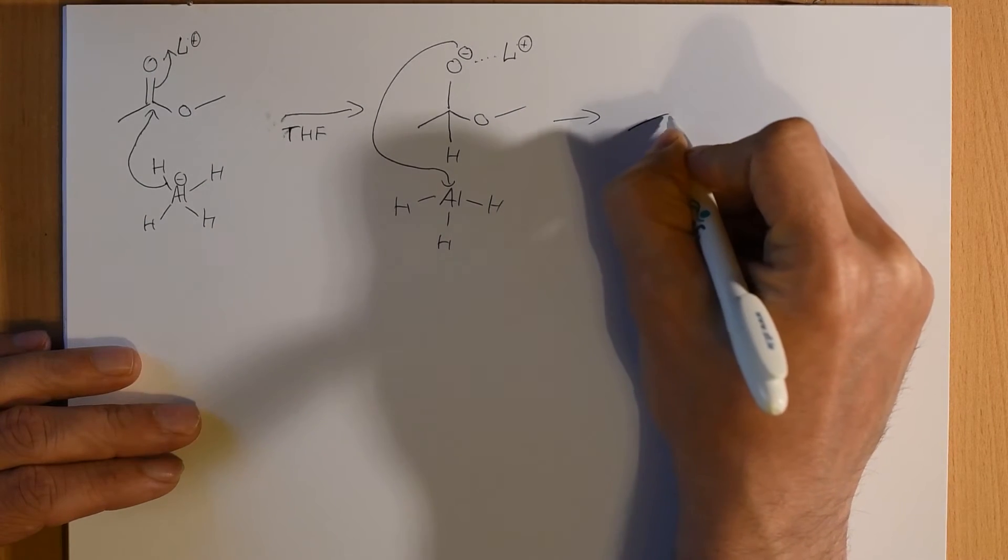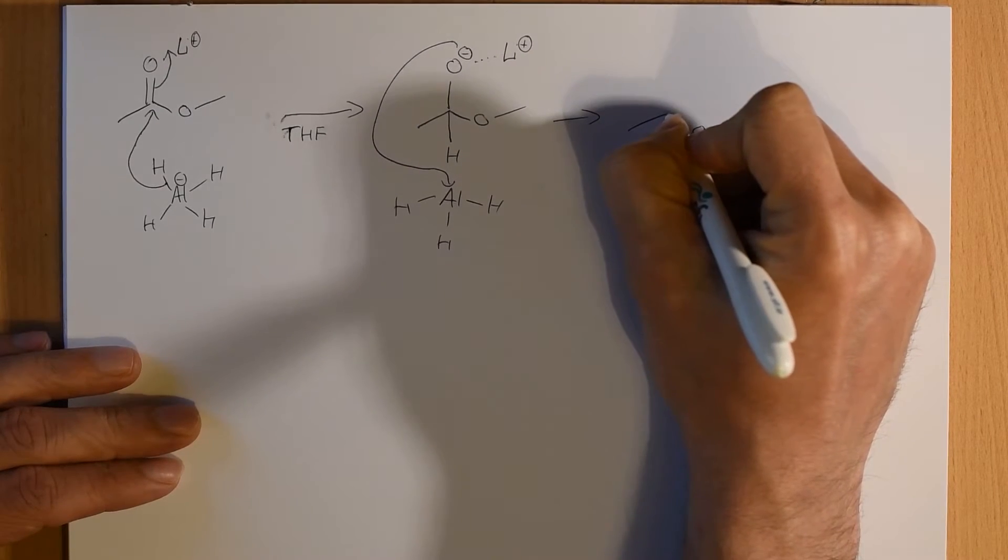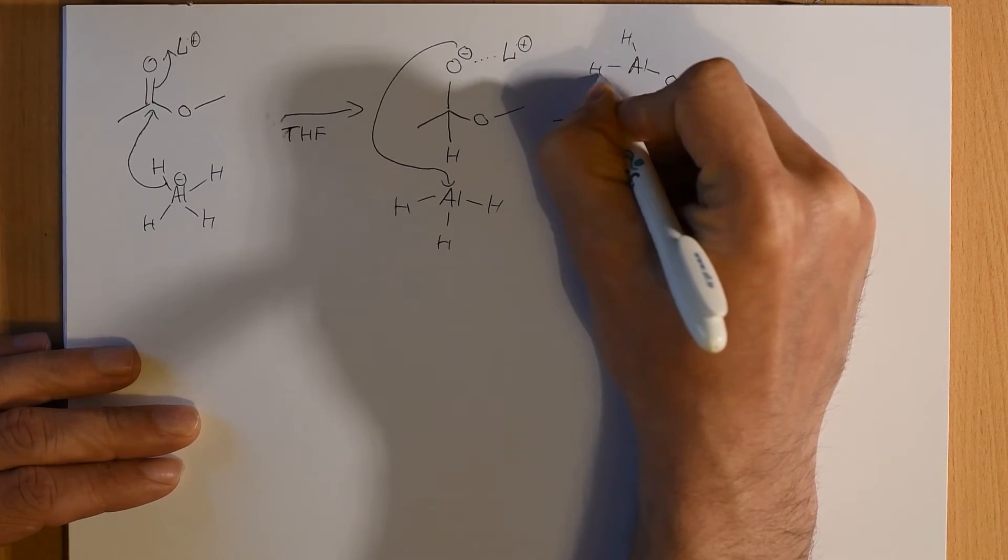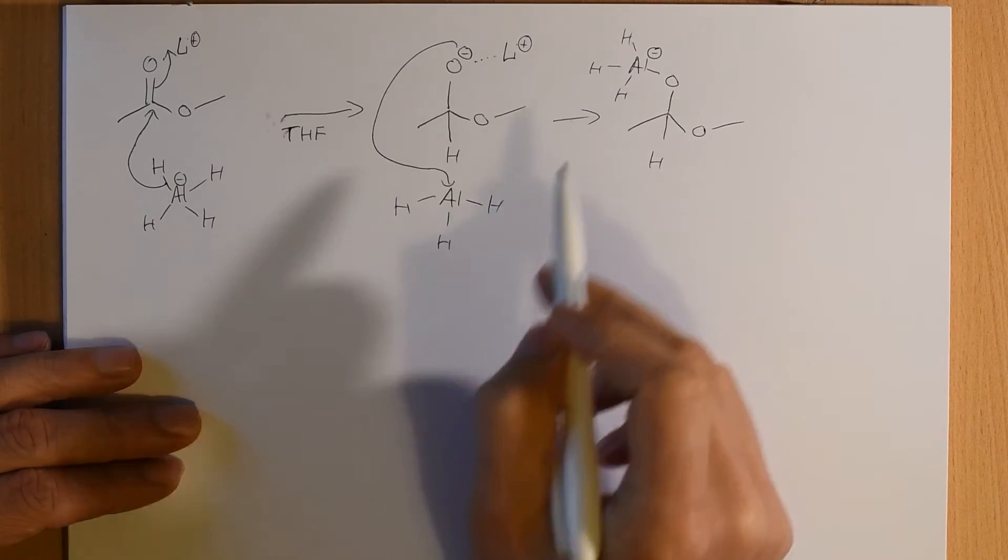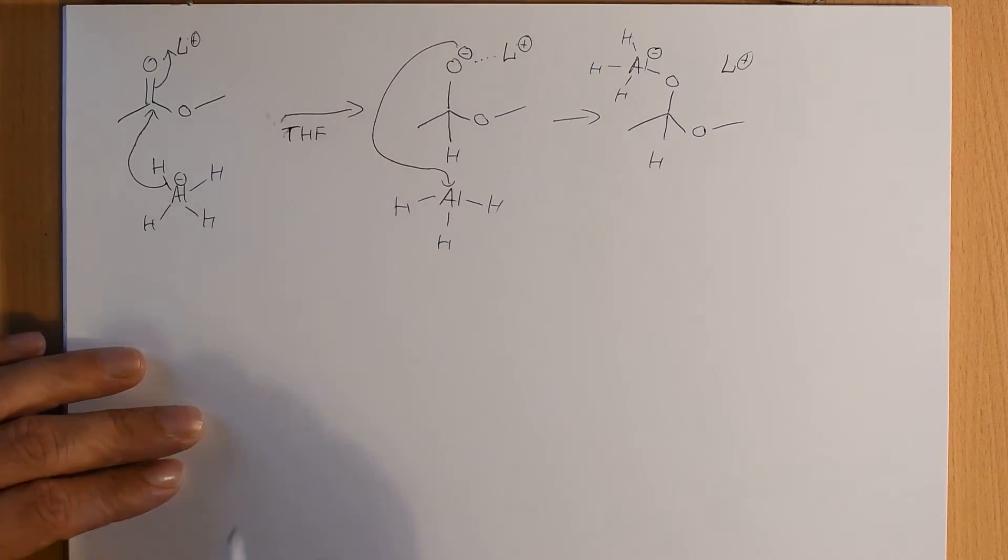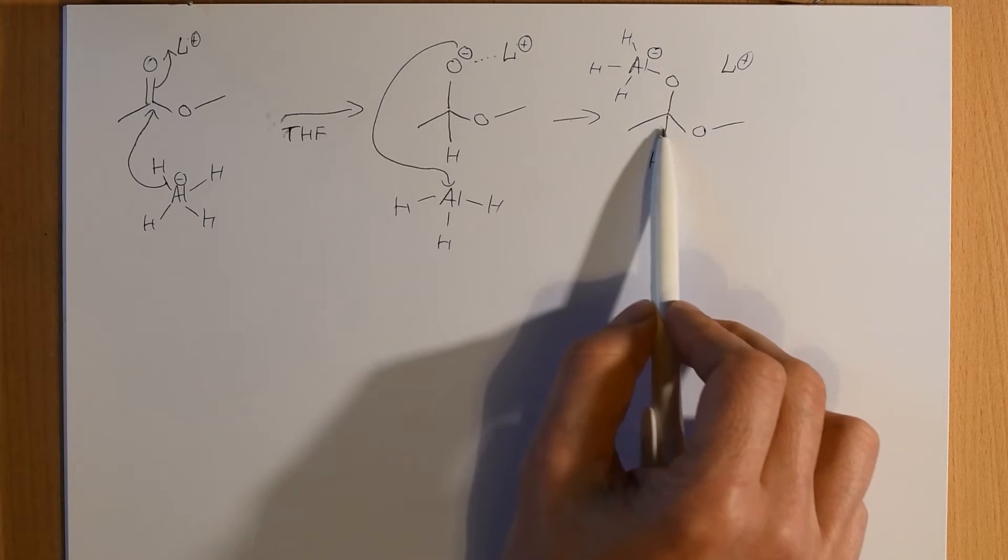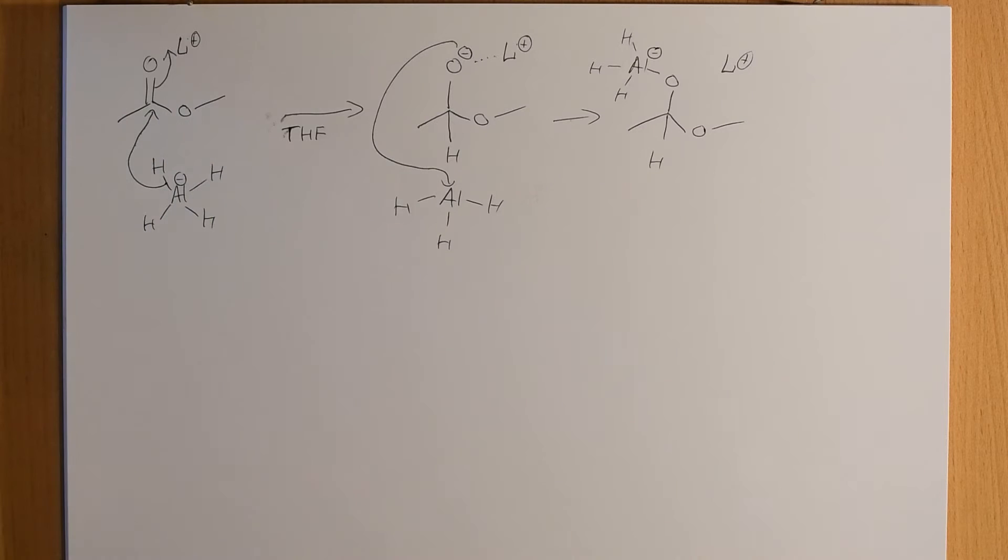And we'll now have something that looks like this. So, our aluminum is back having a negative charge and our lithium is back to being a spectator ion. What's going to happen next? Well, the first thing that's going to happen is that you might recognize this kind of situation here from other times that we've attacked carbonyls that have leaving groups on them. We've formed a tetrahedral intermediate.